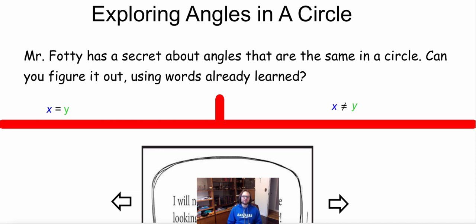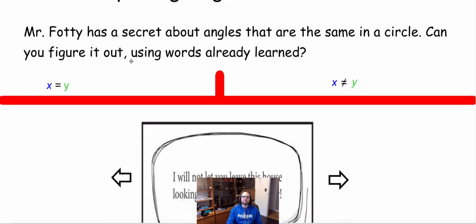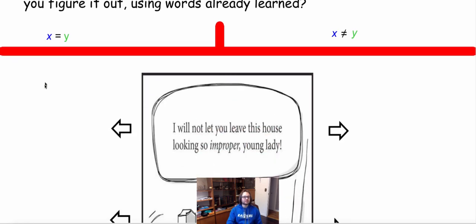So let's look at our first exploration here. It says Mr. Foti has a secret about the angles that are the same in a circle. Can you figure it out using the words that we've already learned? So using definitions we already learned, I want you to see if you can figure out what my secret is. On this side, we have where x is equal to y, and on the other side, it's when x is not equal to y.